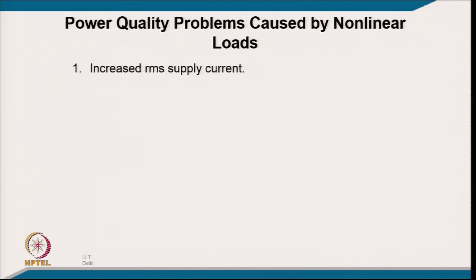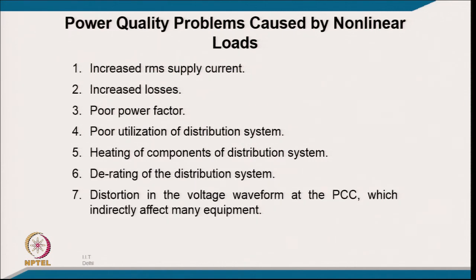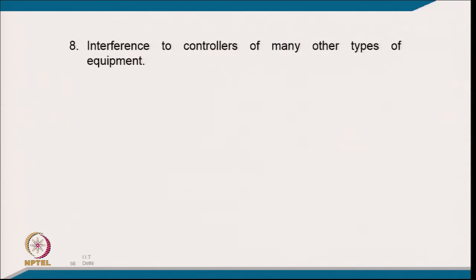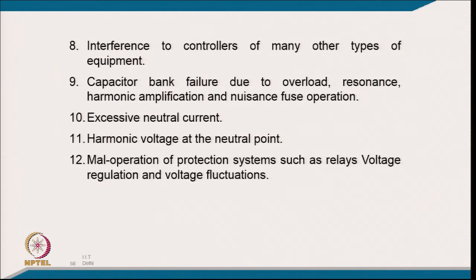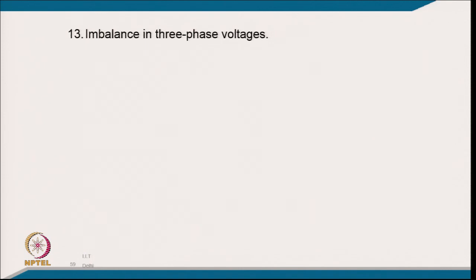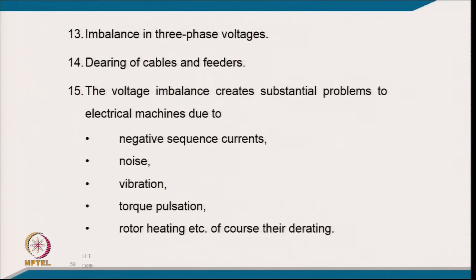Power quality problems caused by non-linear loads include: increased RMS current and increased losses, poor power factor, poor utilization of distribution equipment, heating of distribution components, derating of distribution systems, distortion in voltage waveform at the point of common coupling, interference with equipment controllers, capacitor bank failure due to overload and resonance, harmonic amplification, nuisance tripping, excessive neutral current, harmonic voltage at the neutral point, malfunction of protection systems, voltage regulation issues, voltage fluctuation, three-phase voltage imbalance, derating of cables and line feeders, and problems in induction motors due to negative sequence currents — including noise, vibration, torque pulsation, rotor heating, and derating.